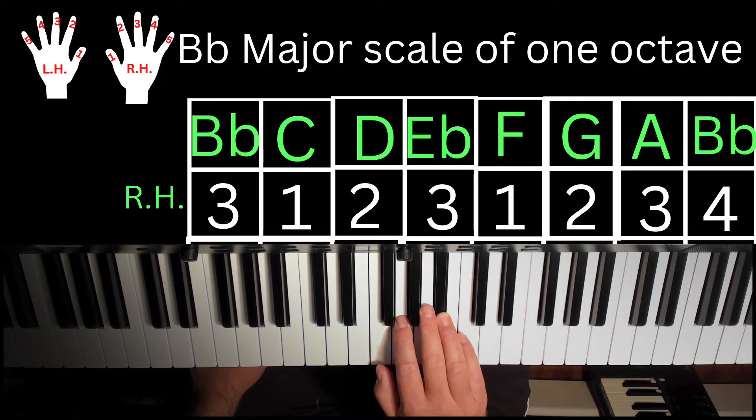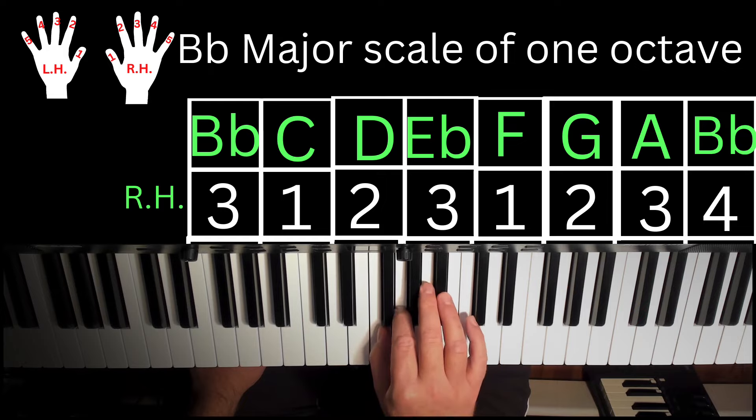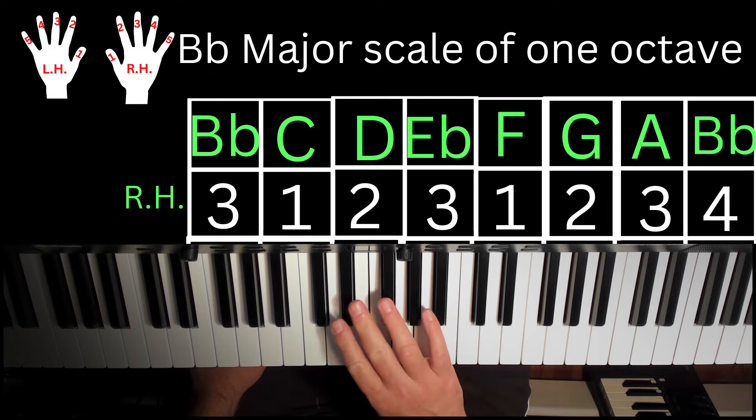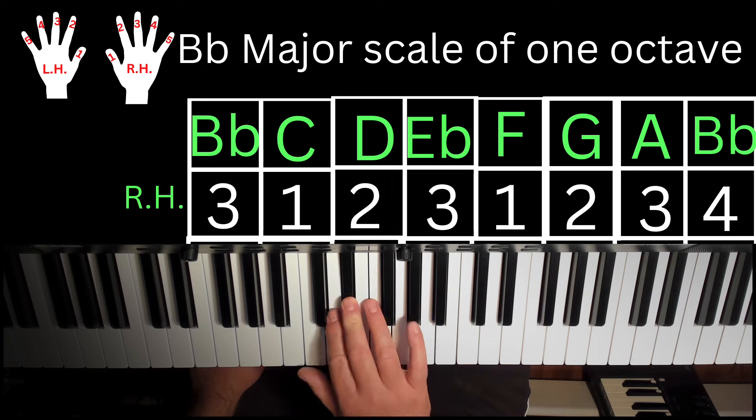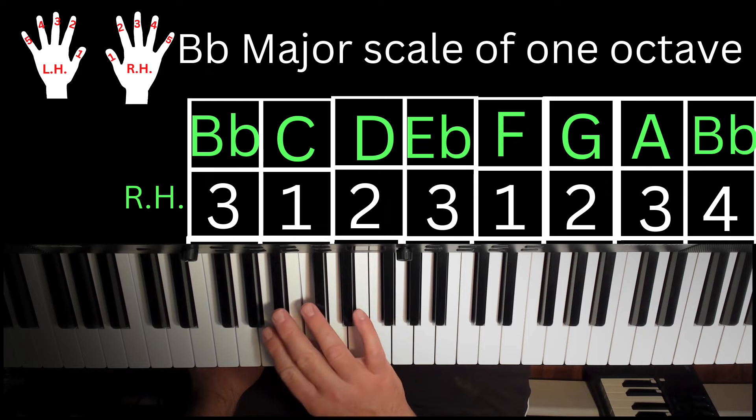Now go back down, three on A, two, one on F, crossing to E-flat with three, two on D, one on C, and three on B-flat.